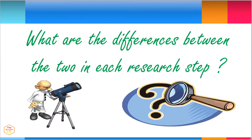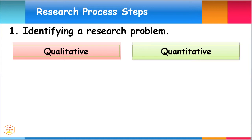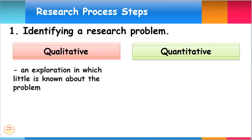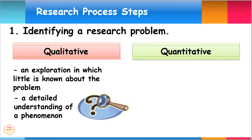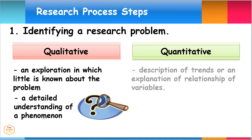What are the differences between qualitative and quantitative research in each research step? In qualitative research, it is an exploration in which little is known about the problem, and there is a detailed understanding only of a central phenomenon. In quantitative research, the research problem seeks to get a description of trends or an explanation of relationships of variables.